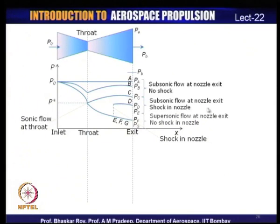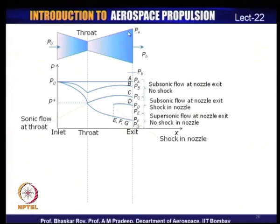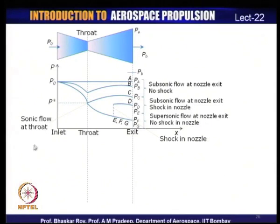If back pressure is reduced further, the shock in the diverging section continuously moves outward. Eventually the shock is pushed out of the diffuser and flow becomes supersonic at the nozzle exit.